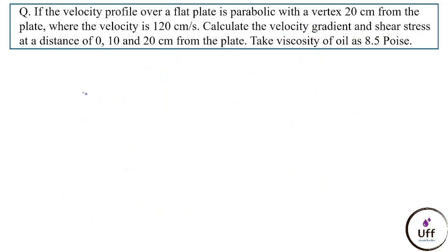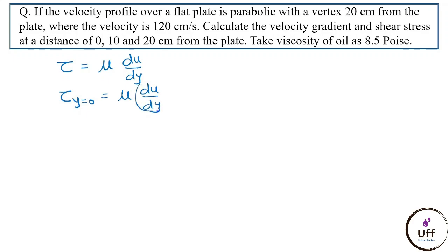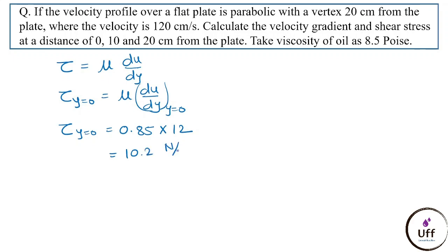Shear stress τ = μ × (du/dy). Viscosity is 8.5 poise = 0.85 N·s/m² in SI units. At y = 0: τ = 0.85 × 12 = 10.2 N/m².